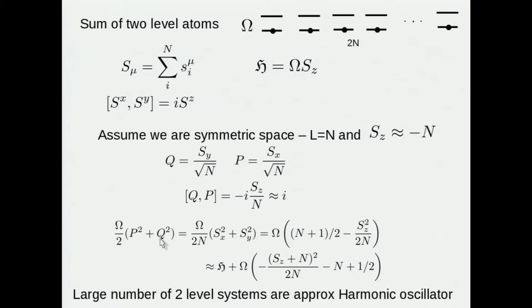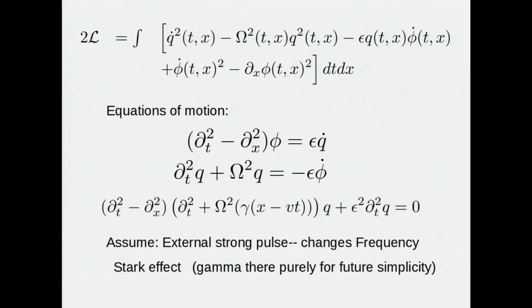Furthermore, the Hamiltonian, omega squared, P squared, plus Q squared, can be written in terms of the spins. And it's just equal to the Hamiltonian for this bunch of two level systems, plus terms which go as one over N, plus constants. And nobody cares about constants in the Hamiltonian. So if one has a whole bunch of two level systems, they act like a harmonic oscillator, at least if they're all fairly near their ground state. So the harmonic oscillator approximation is actually quite a good approximation.